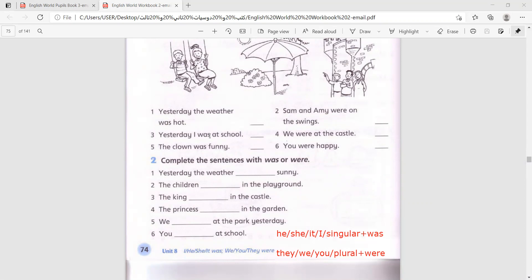Now let's answer the questions. Yesterday the weather was sunny. The children were in the playground. The king was in the castle. The princess was in the garden. Number five: We were at the park yesterday. You were at school. Okay, pause and copy.